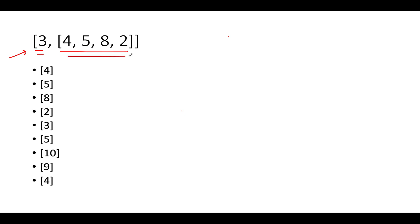Let's take the same example from the question. We have k equal to 3 and the initial array is [4, 5, 8, 2]. At each step we want to identify the kth largest element out of all elements added so far. We will use a MinHeap for this purpose. A MinHeap has the property that whenever you pull out elements from it, it always returns the lowest element present among all elements added.